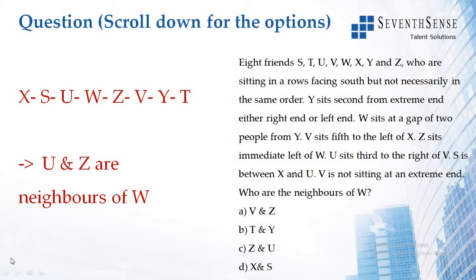According to the given statements, you can arrange 8 people in this order. All are facing south, and this would be their left and this would be their right side.